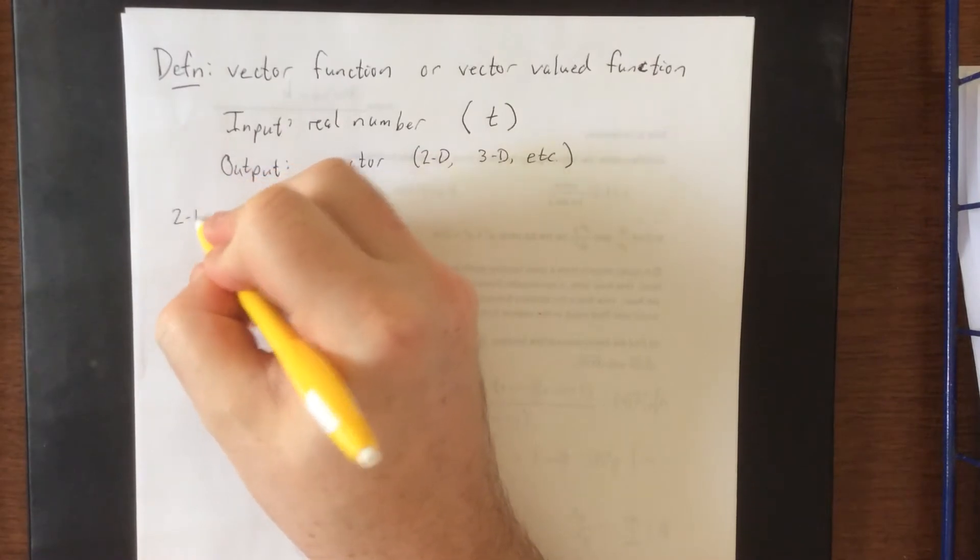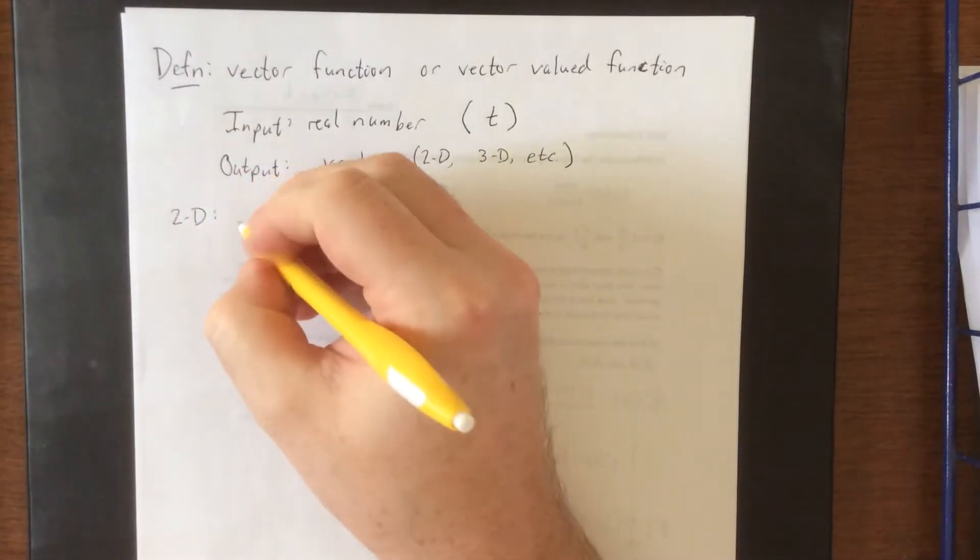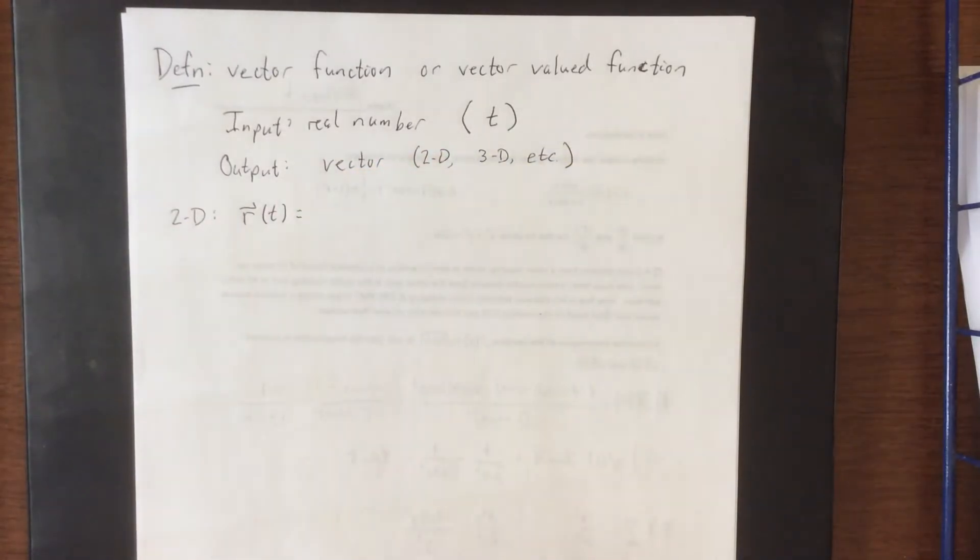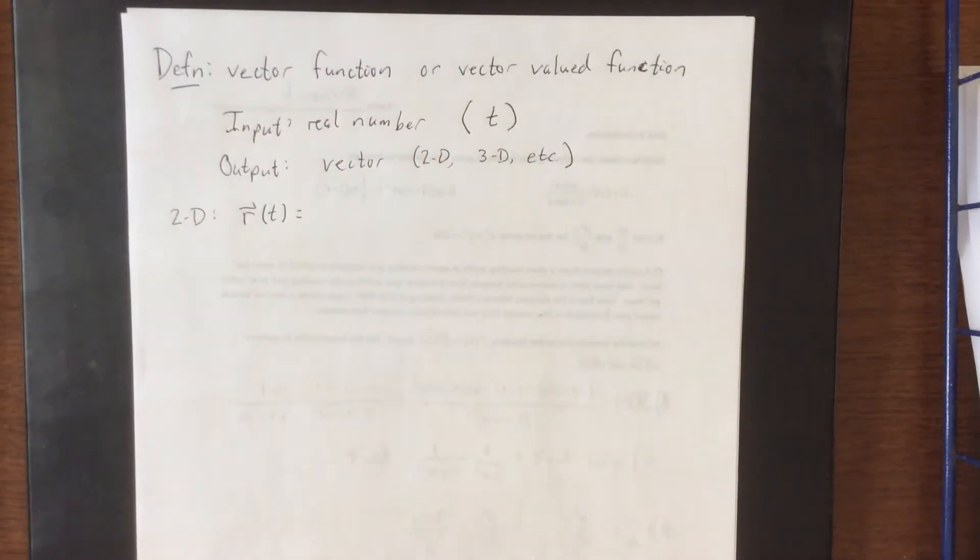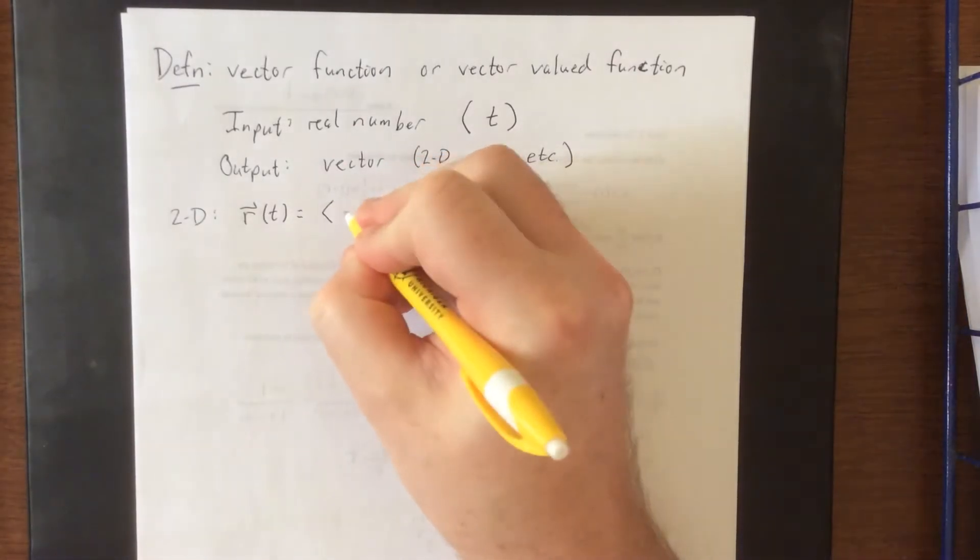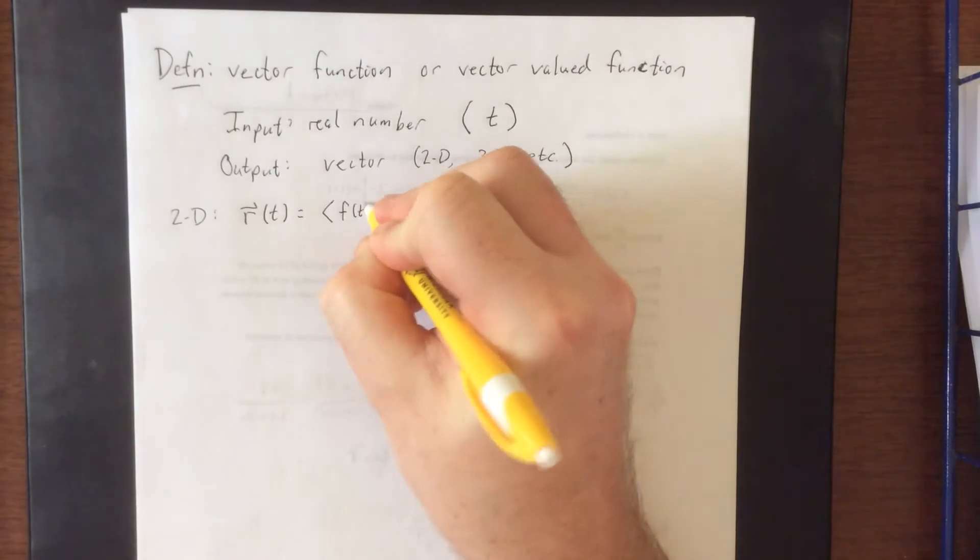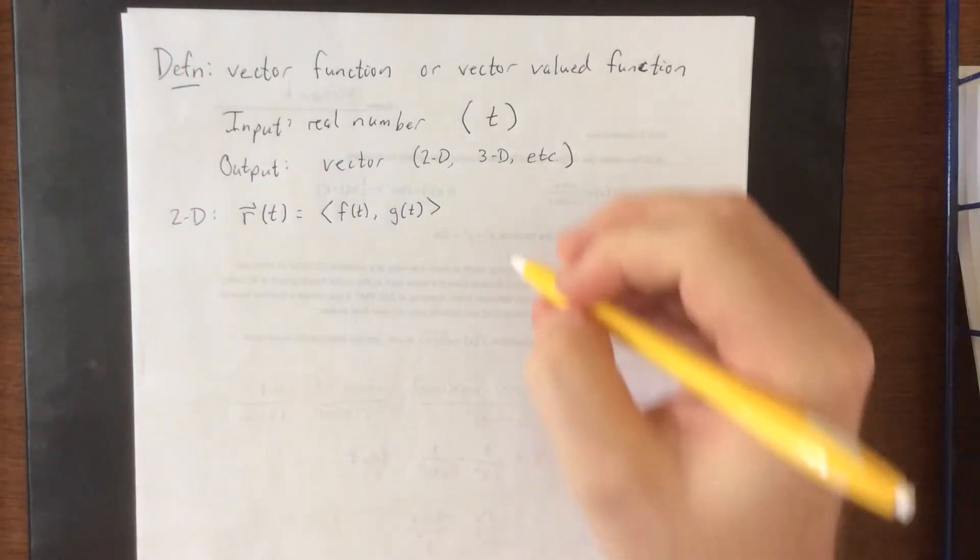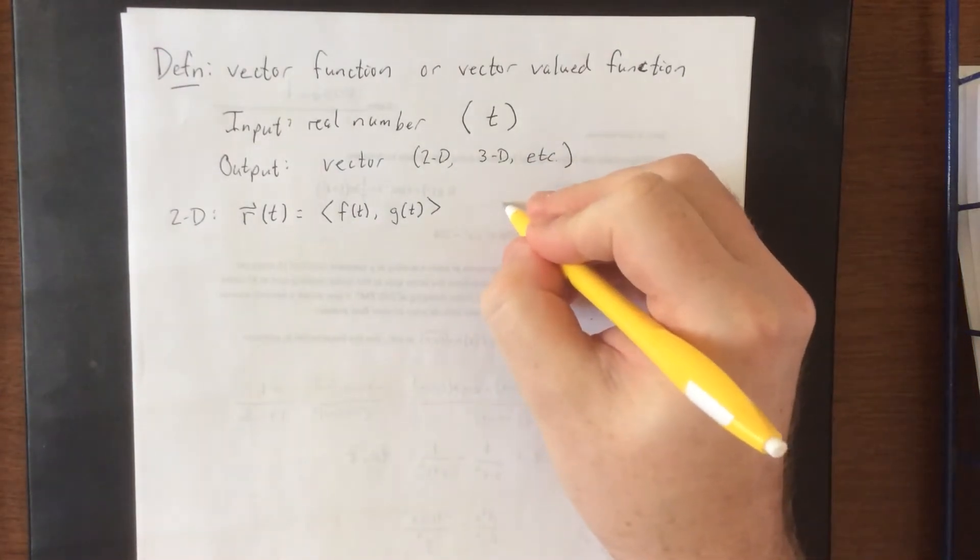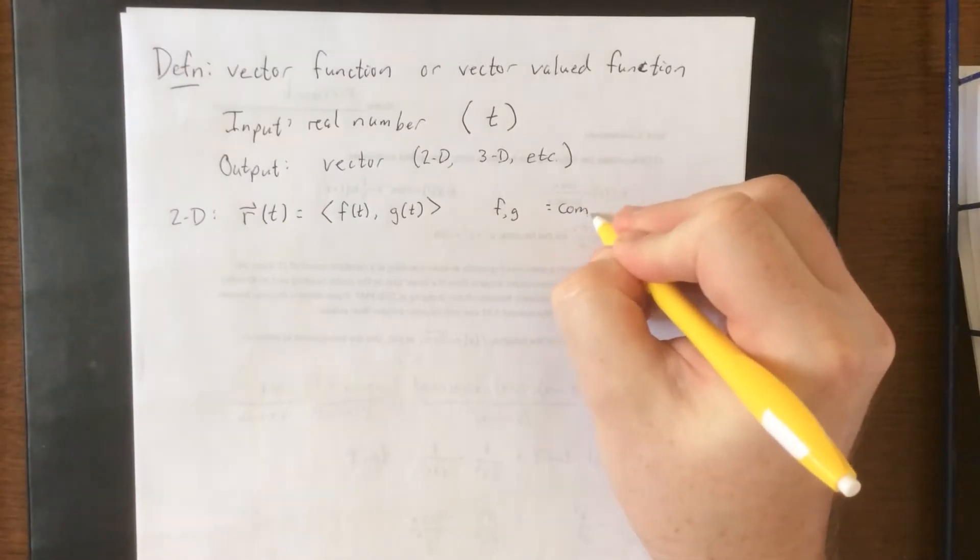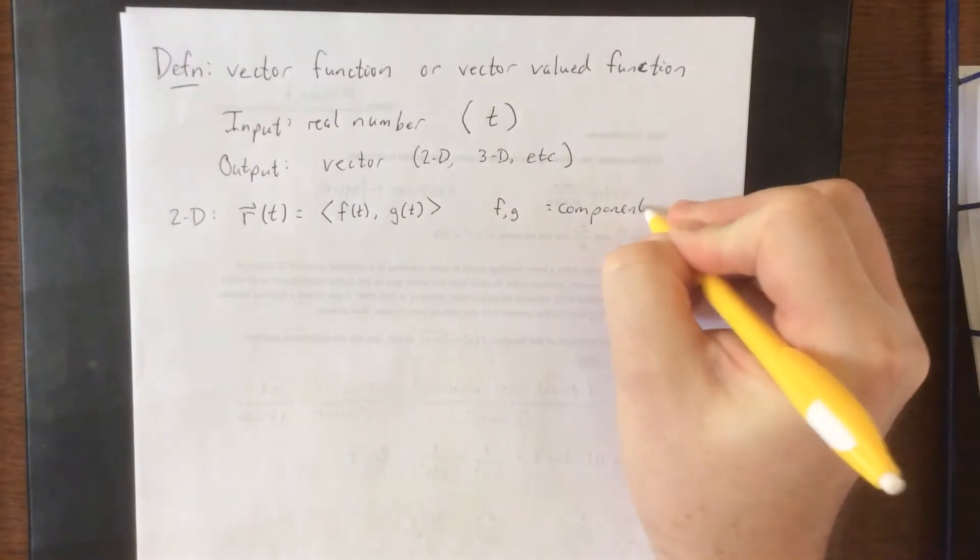So the look of a two-dimensional vector function: the most typical variable that we use for a vector function is r, and that r is going to relate to a radius. So we'll use our vector brackets, and we will use two component functions. Typically f and g would be used for this. So f and g are referred to as component functions.